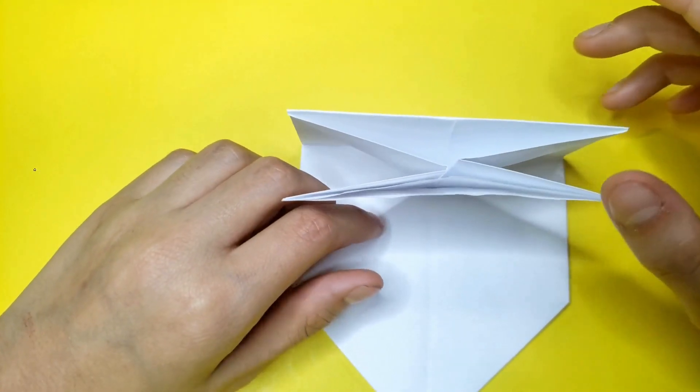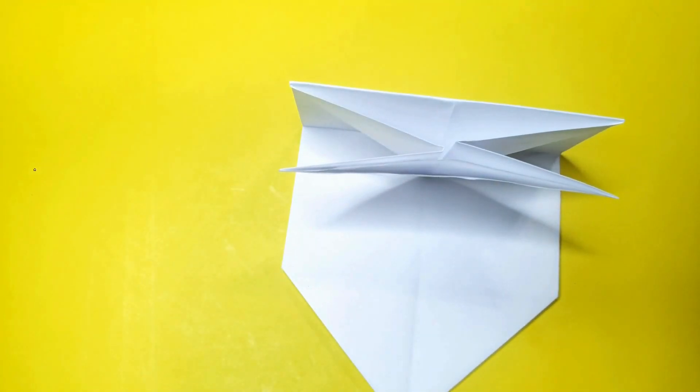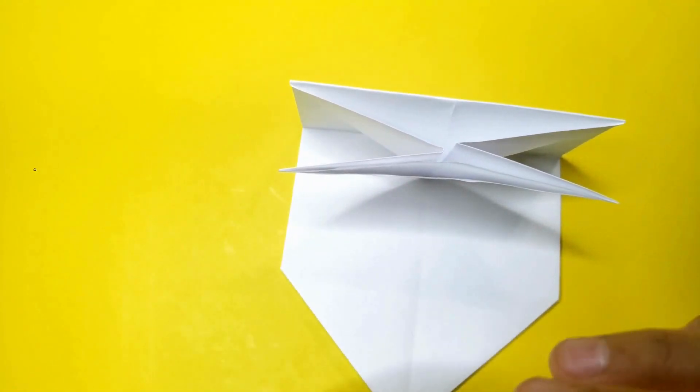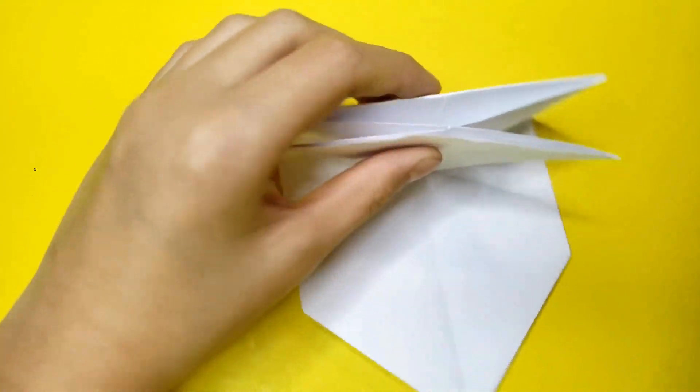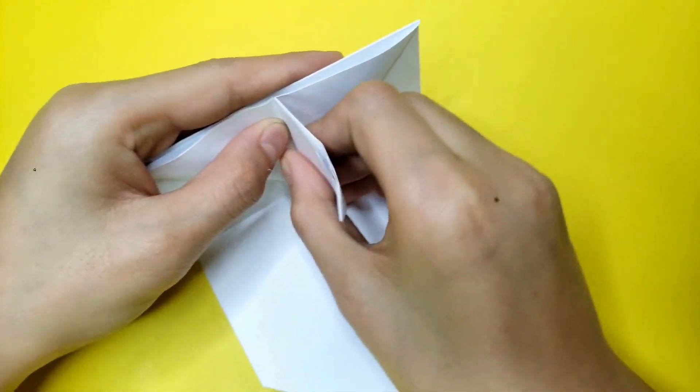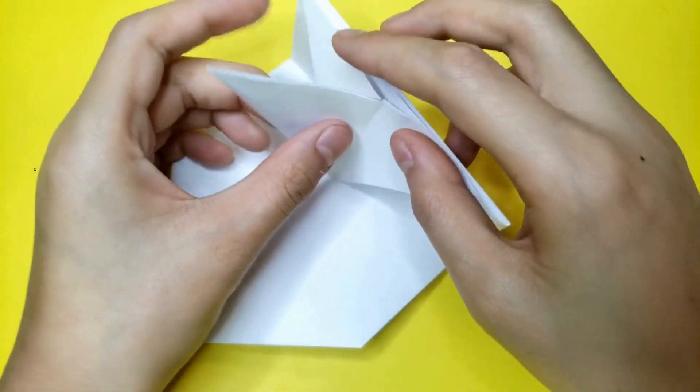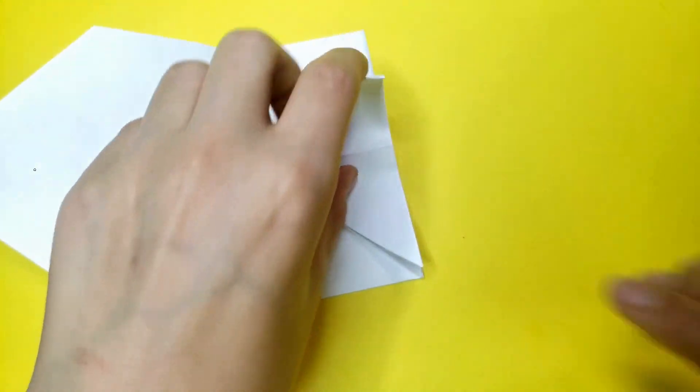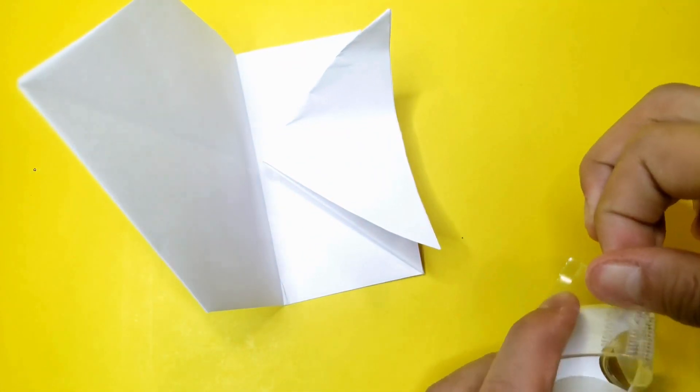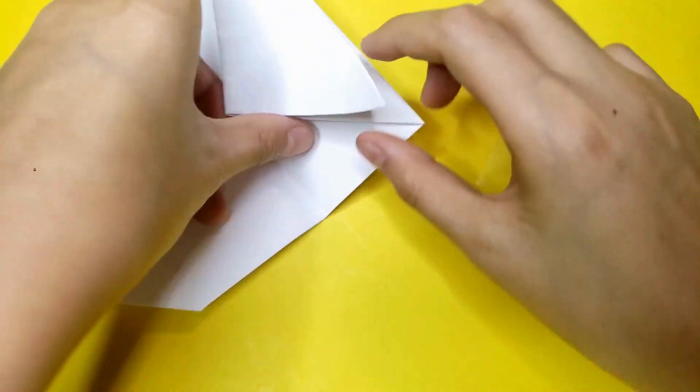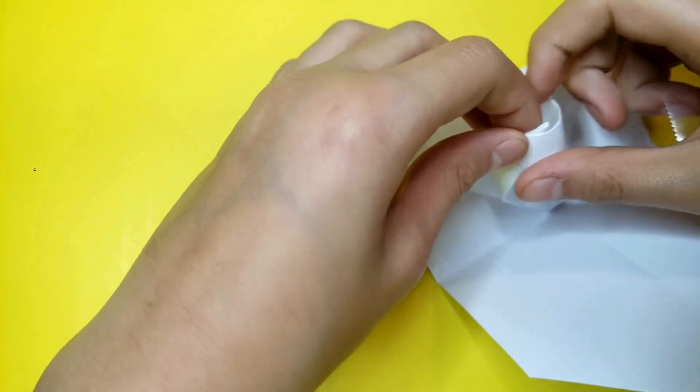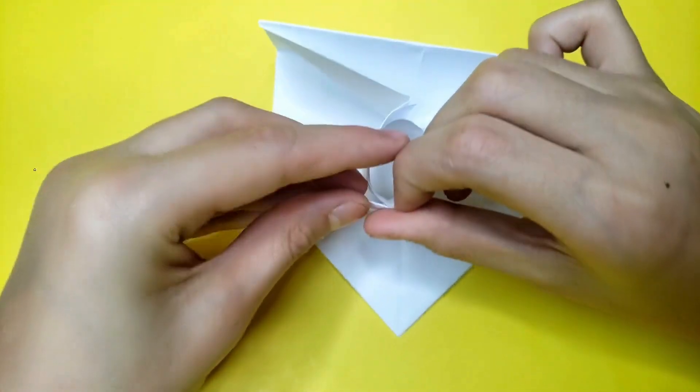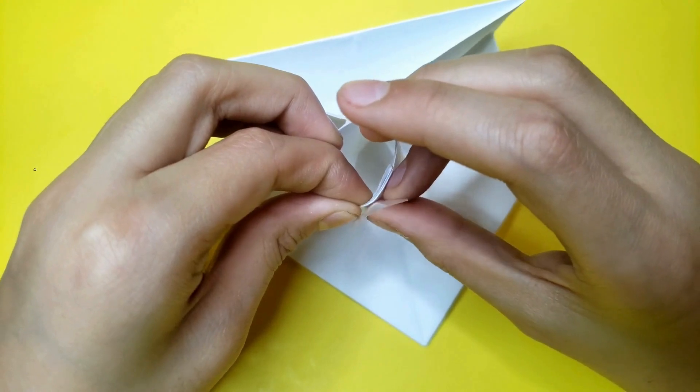Now it should be standing up like this. Before you put the tape on, curl both sides to shape it. Then get a piece of tape and tape it together.